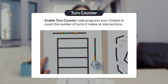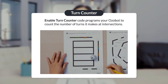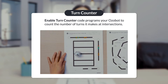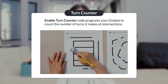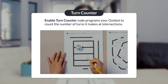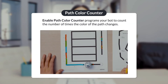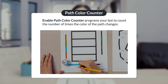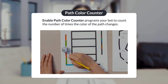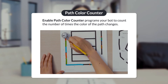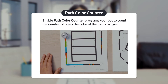Next is the enable turn counter. This code programs your Ozobot to count the number of turns it makes at intersections. After five turns at intersections, it stops. Then the enable path color counter programs your bot to count the number of times the color of the path changes. After how many color changes do you think the bot will stop? You're correct — five.